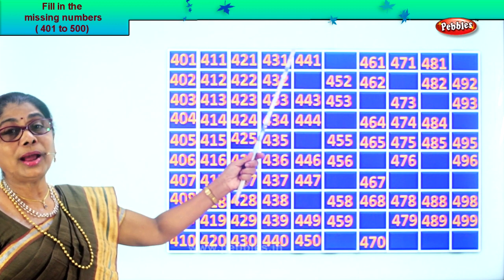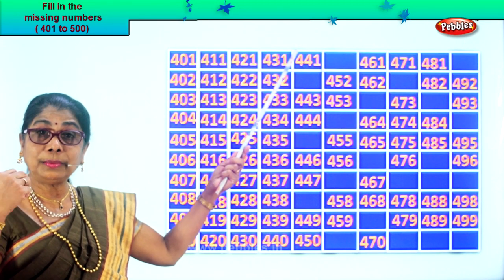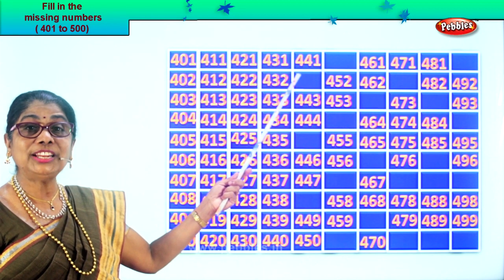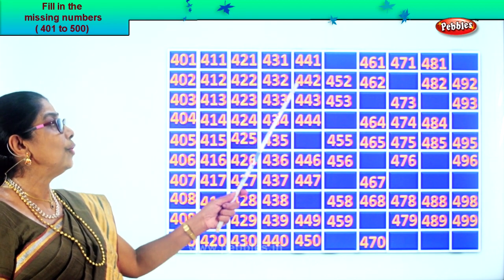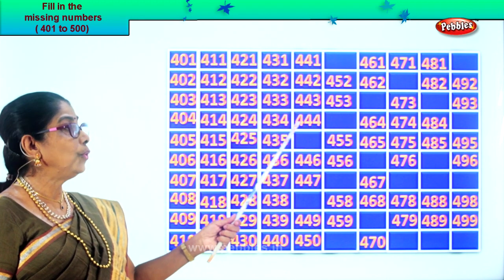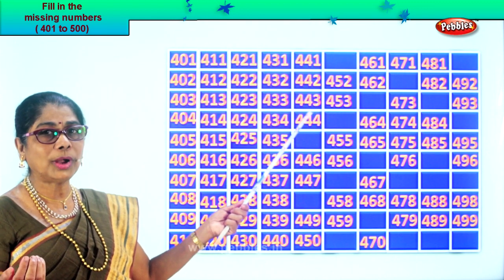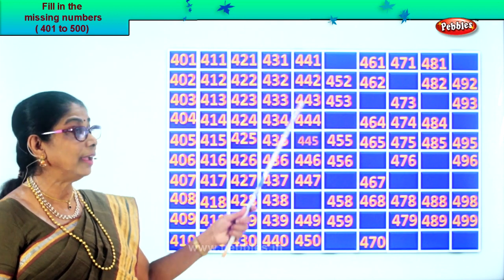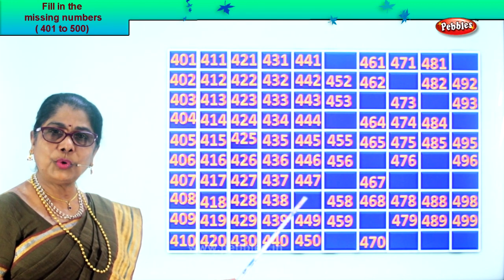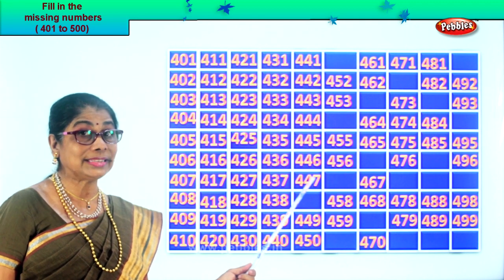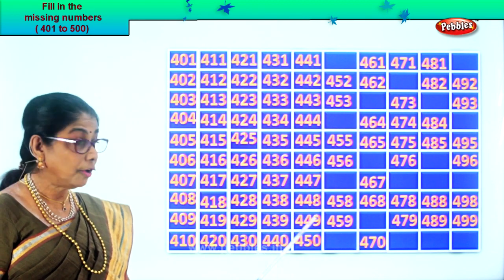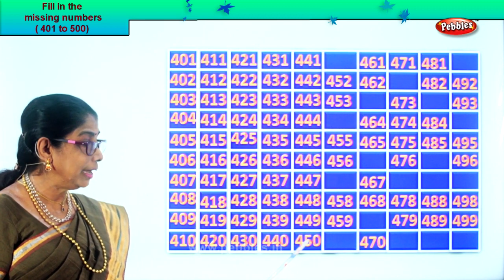After 40 comes 41, so 441. After 1 comes 2, after 41 comes 42 — 442. Good. 443, 444. After 4 comes 5, after 44 comes 45 — so 445. 446, 447. After 7 comes 8, after 47 comes 48 — 448, 449, 450.